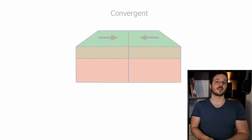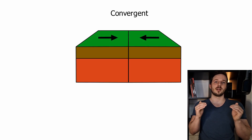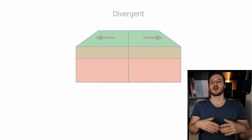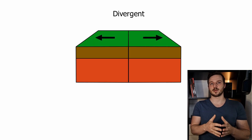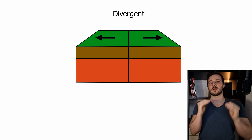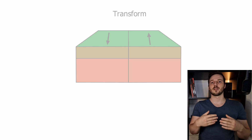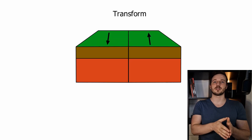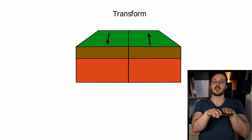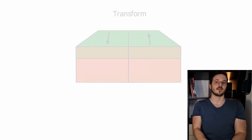We have three different kinds of plate movement. We have convergent plates, which means two plates are pushed towards each other. We have divergent movement, which means that the plates are pushed away from one another, and the third one is transform movement, which means that the plates are pushed beside each other.